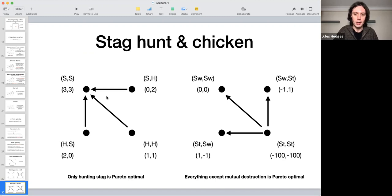So in the stag hunt, we will find that both players hunting stag Pareto dominates everything else, and so it is the only Pareto optimal strategy.